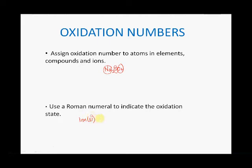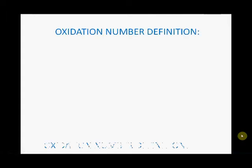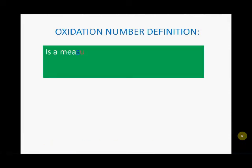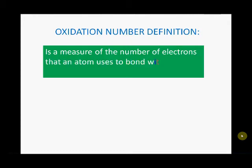Another thing is to use Roman numerals to indicate the oxidation state. So if you have something like iron three chloride, we're going to find out what those Roman numerals mean. An oxidation number is defined as a measure of the number of electrons that an atom uses to bond with atoms of another element.